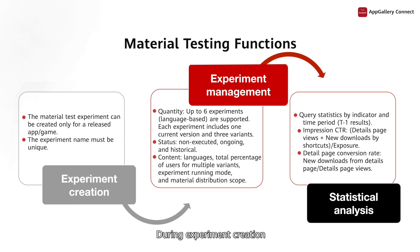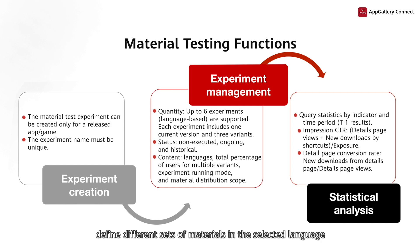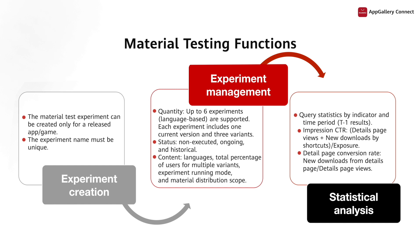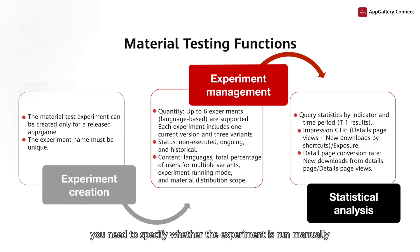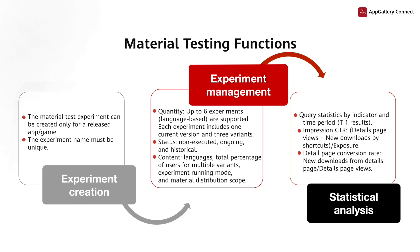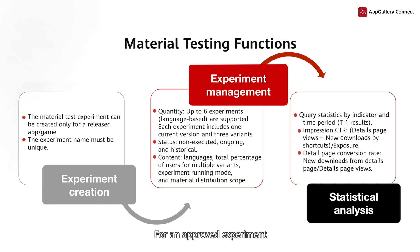During experiment creation, first select a language, define different sets of materials in the selected language, and set the total percentage of users. In addition, you need to specify whether the experiment is run manually or automatically after approval. Then determine the material scope and submit the application for review. For an approved experiment, different sets of materials will be distributed to different users.